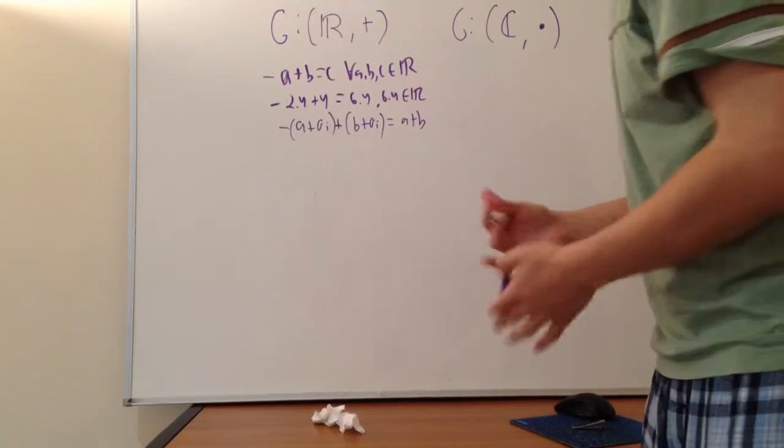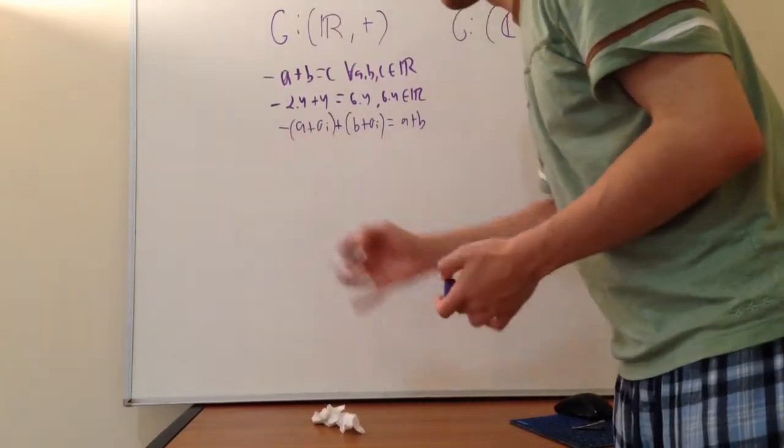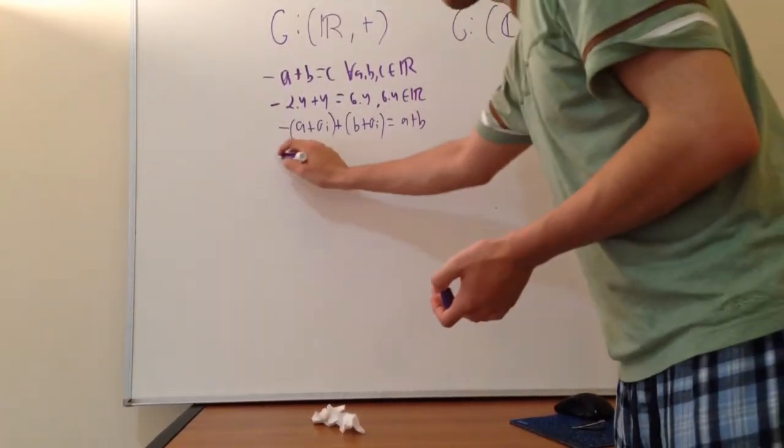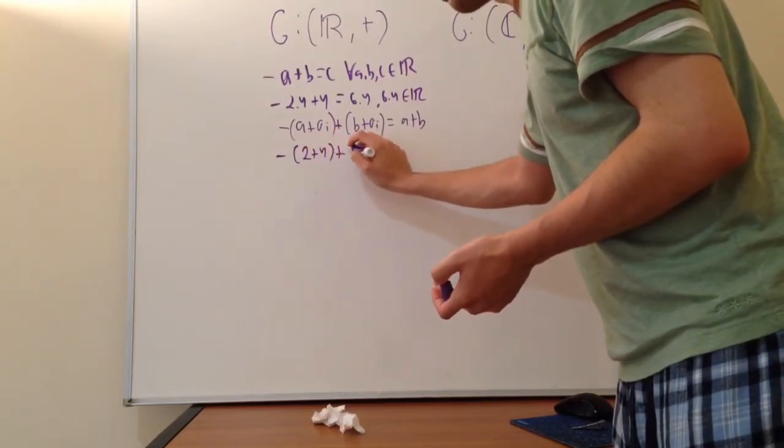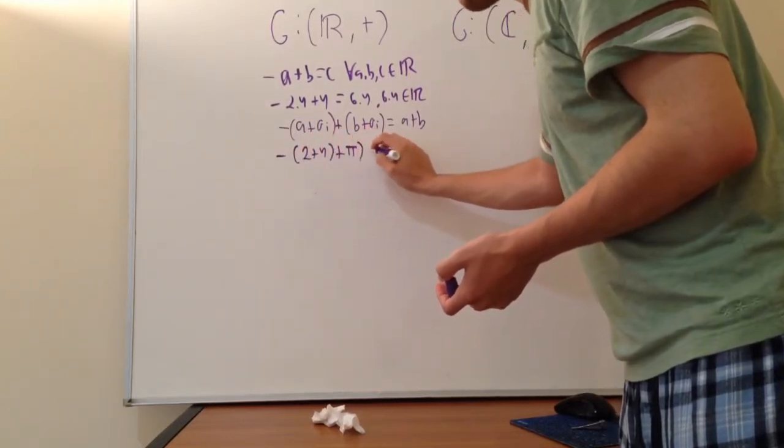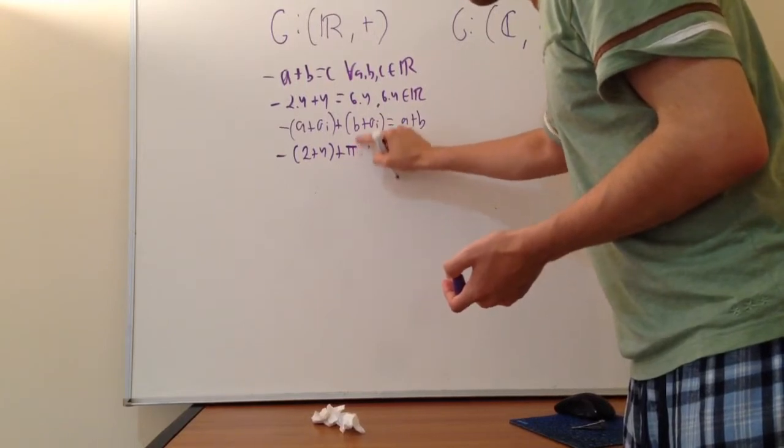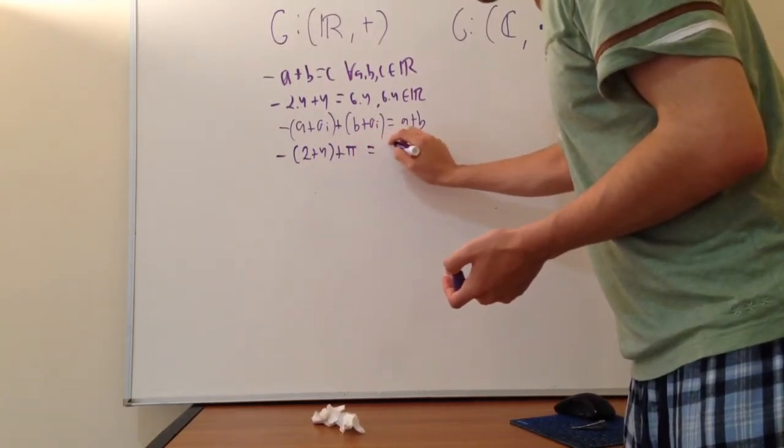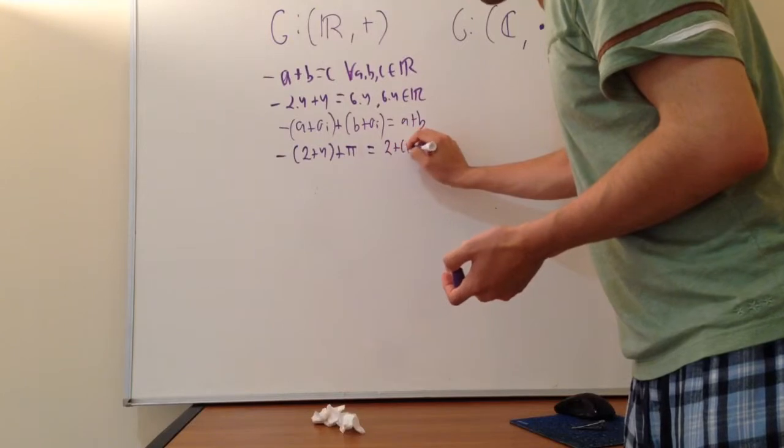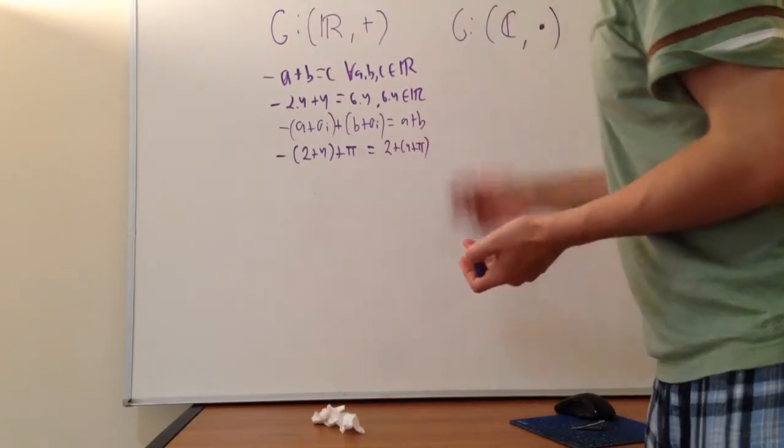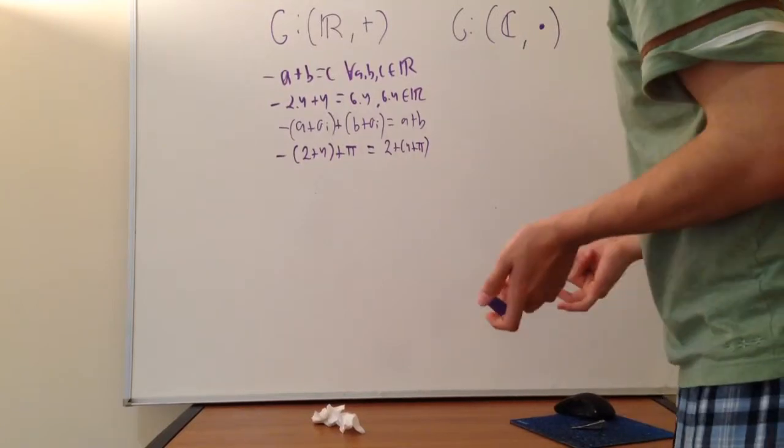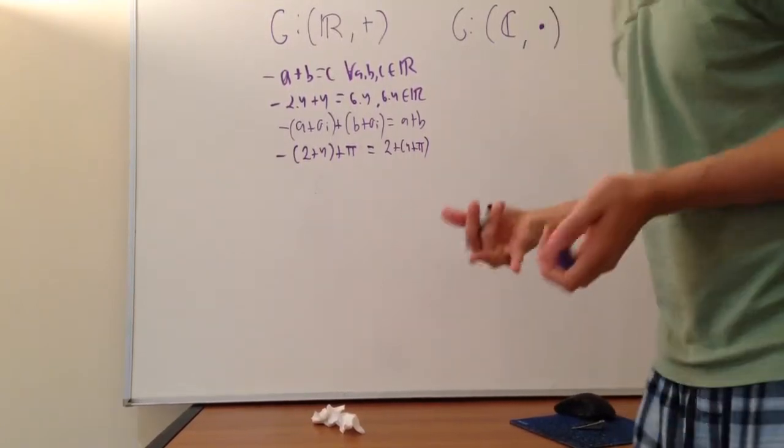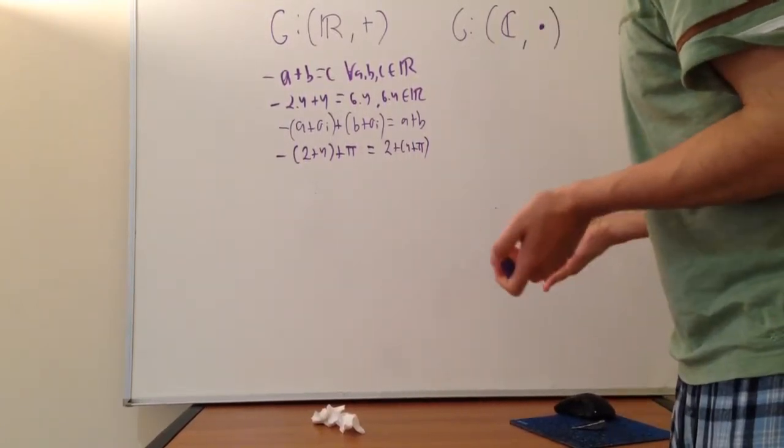That's one property satisfied. What about the other three? We need to have the fact that they're associative. We know that. If we have (2 + 4) + π, that's going to be the same as 2 + (4 + π). If it's associative, it's the same thing. You can always plug in the calculator if you're not totally sure.